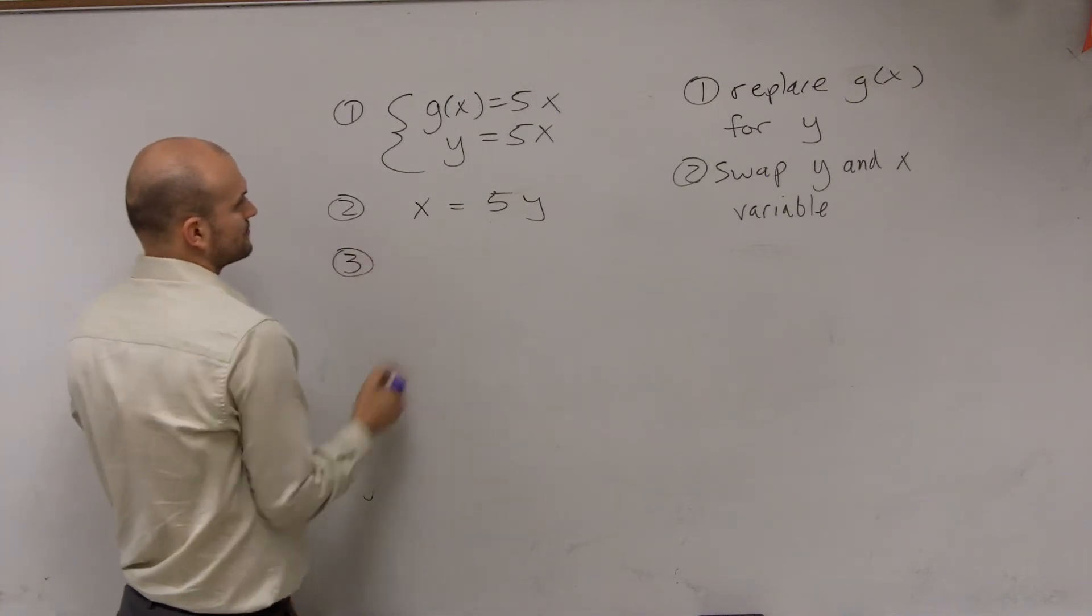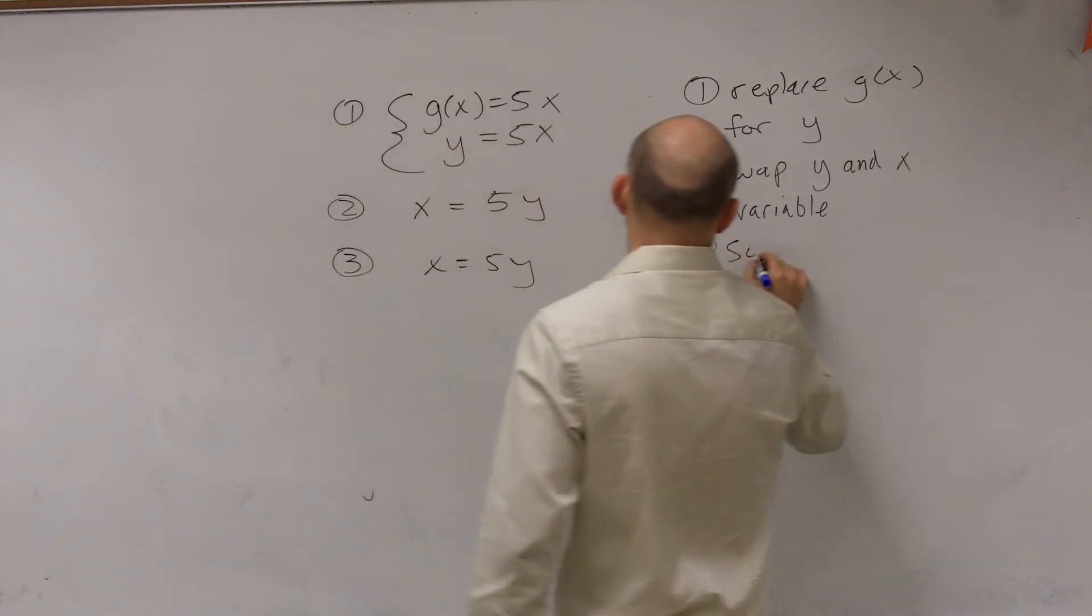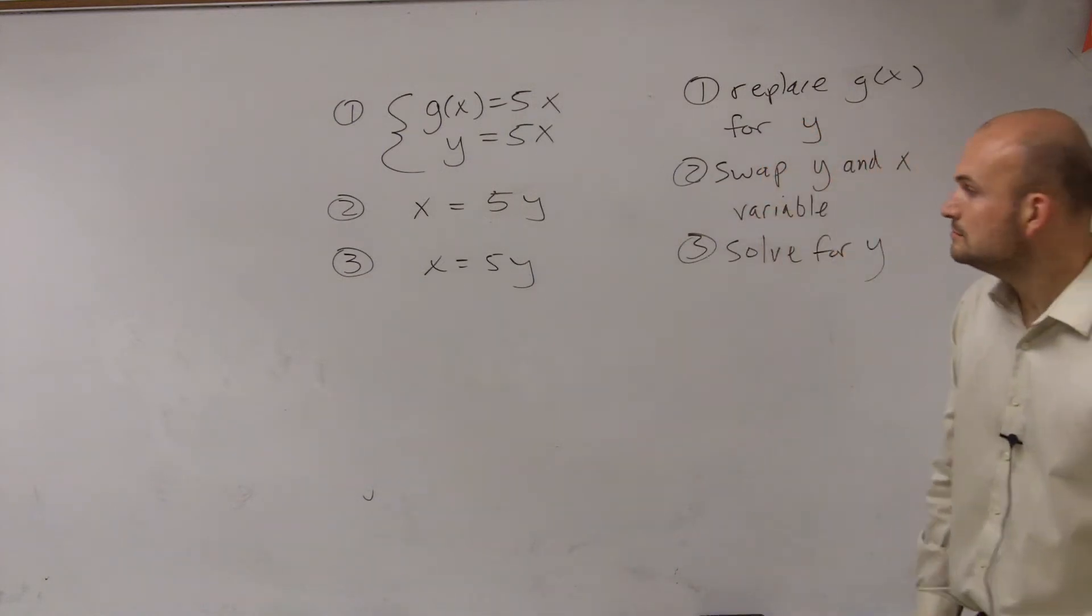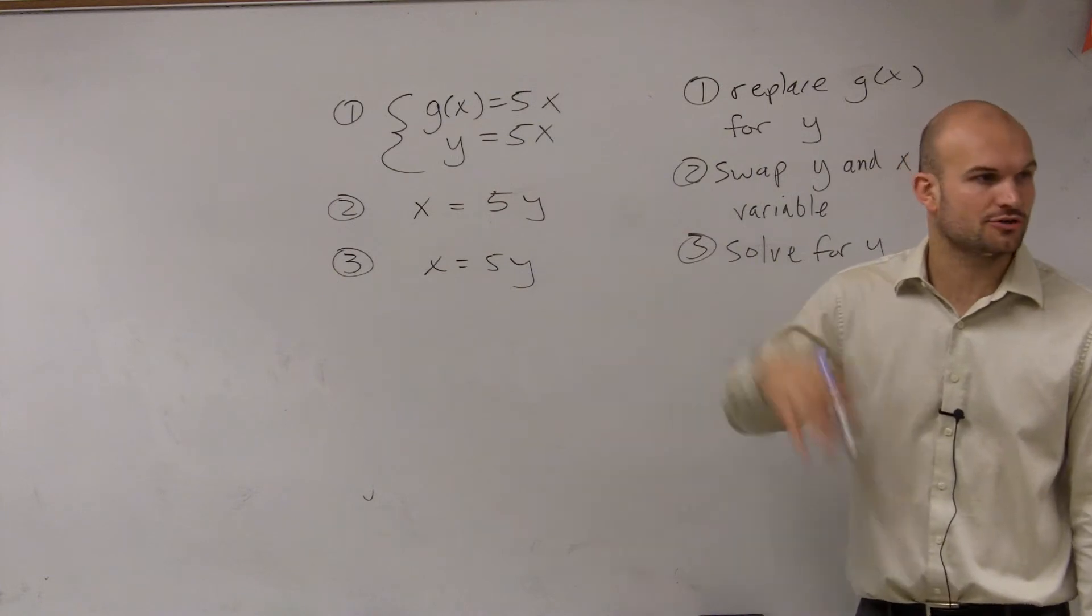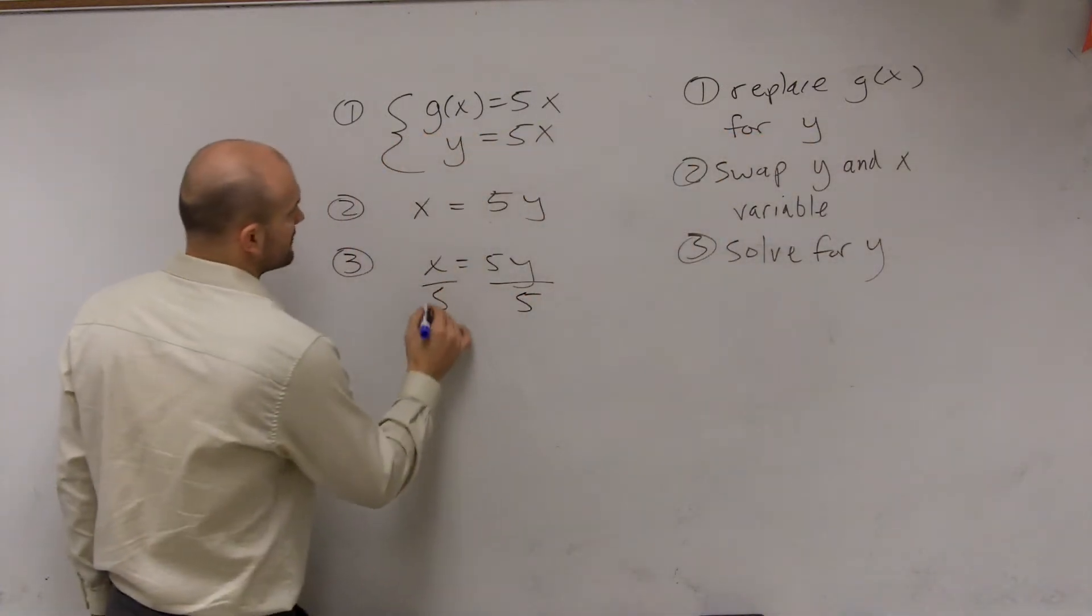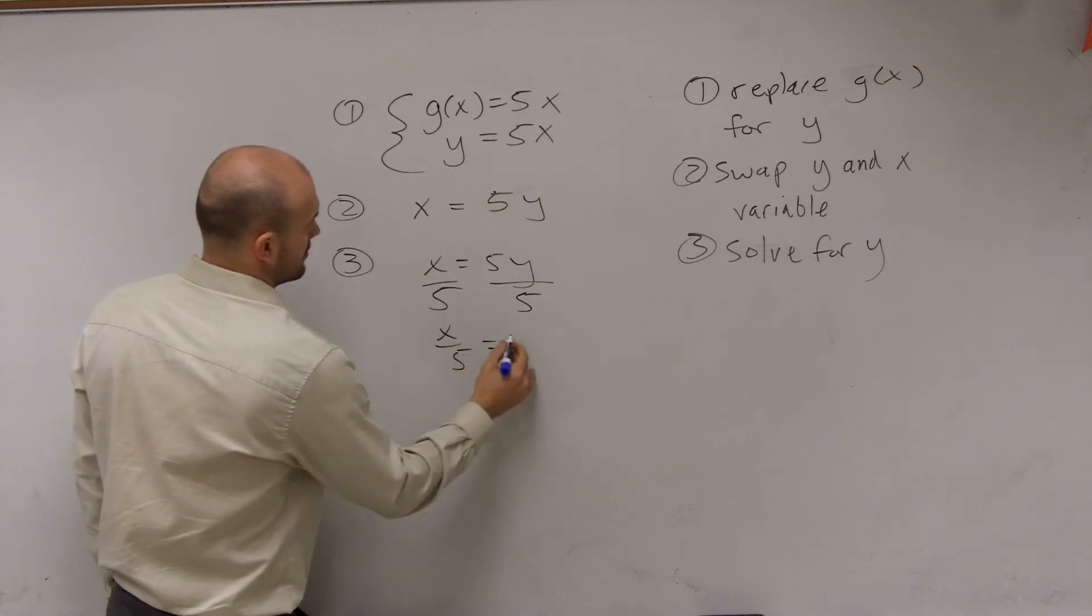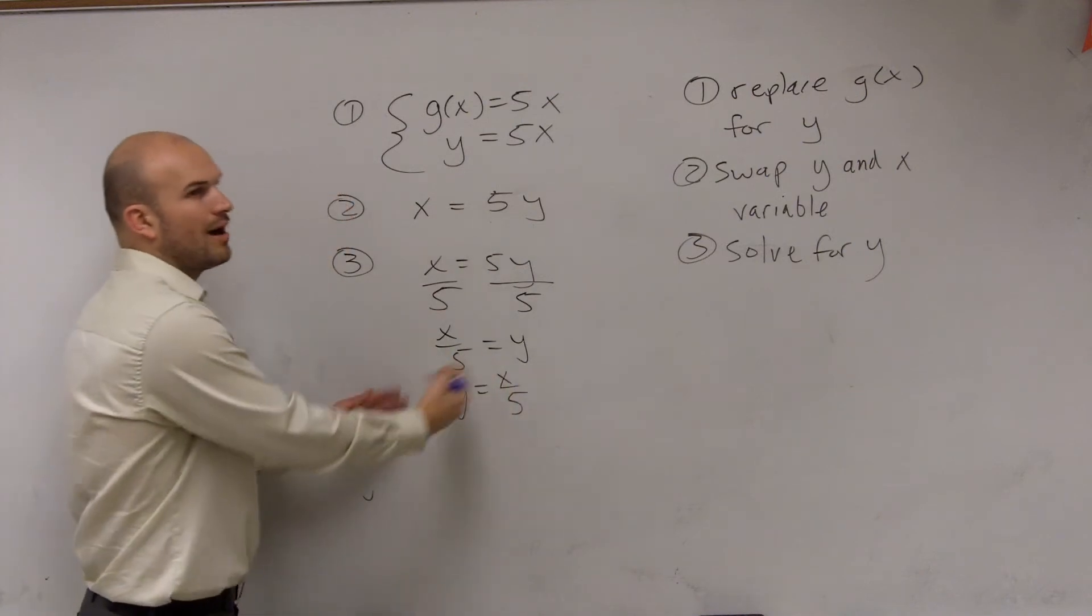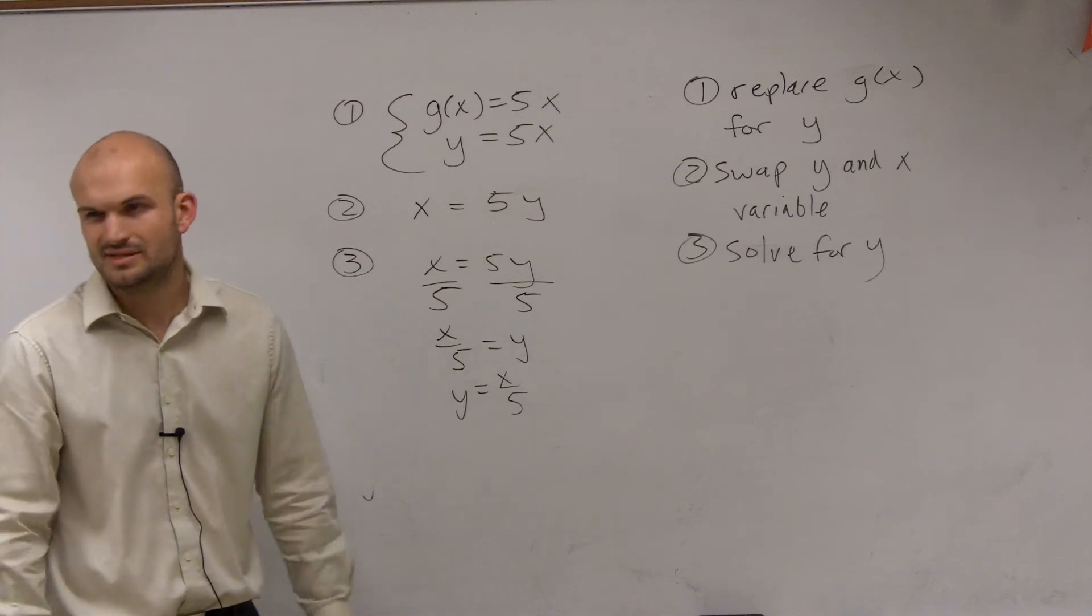Step number three is solve for y. So if I wanted to get y by itself, I would just have to undo the multiplication of five. We're solving for y, and we usually like to write y equals. So that's step number three, solve for y.